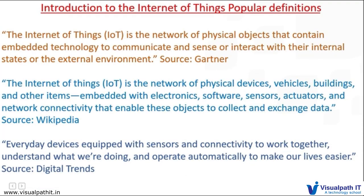Here we have some definitions from different sources. Gartner says IoT is the network of physical objects that contains embedded technology to communicate and sense or interact with their internal states or external environment. Whereas in Wikipedia, IoT is defined as a network of physical devices, buildings and other items embedded with electronics, software, sensors, actuators, and network connectivity that enables these objects to collect and exchange data.